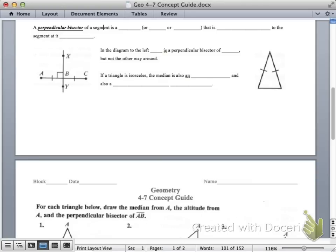A perpendicular bisector of a segment is a line or ray or segment that is perpendicular to the midpoint. Of course, a ray or a segment is a part of a line.